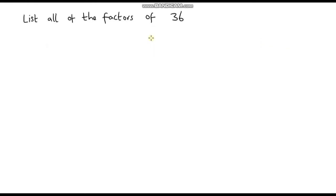Okay let's do one more, and I encourage you to pause the video and see if you can work out all the factors of 36. Now whenever you're doing this, I always encourage you to start at 1 because 1 is a factor of every single whole number — 1 will go into every number. So 1 times 36 is 36, so we've got our first two factors: 1 and 36.